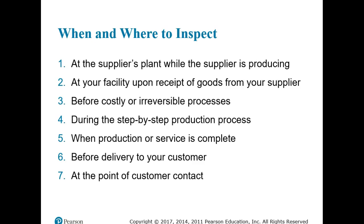Deciding when and where to inspect depends on the type of process and value added at each stage. Inspections can take place at: (1) the supplier's plant while the supplier is producing, (2) your facility upon receipt of goods, (3) before costly or irreversible processes, (4) during step-by-step production, (5) when production or service is complete, (6) before delivery to the customer, and (7) at the point of customer contact.